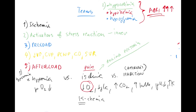PCWP — pulmonary capillary wedge pressure — is a crucial measurement. It used to be used a lot. It's obtained using a Swan-Ganz catheter — Ganz was working in Prague before emigrating to the US. It's a floating catheter.